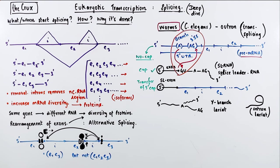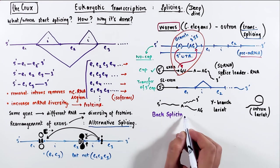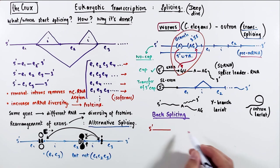So far, outrons have not been observed in humans. All right, so we have covered alternative splicing, canonical splicing, where only intron is removed, and we have seen trans-splicing. The last type of splicing I want you to know is called back-splicing.